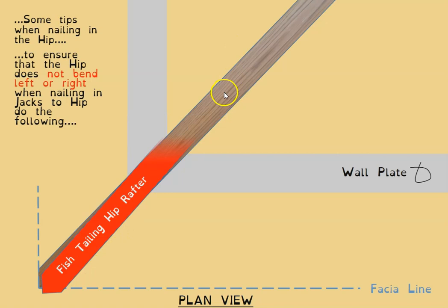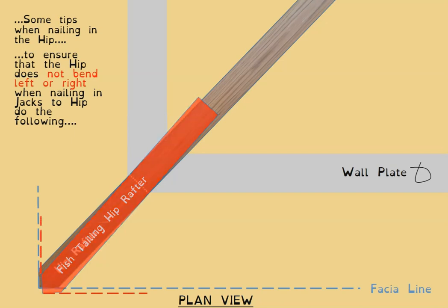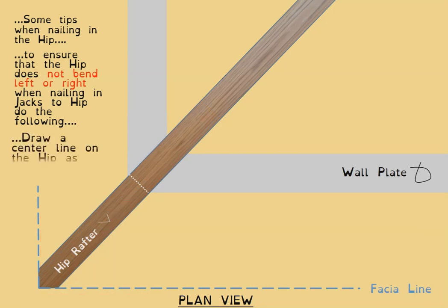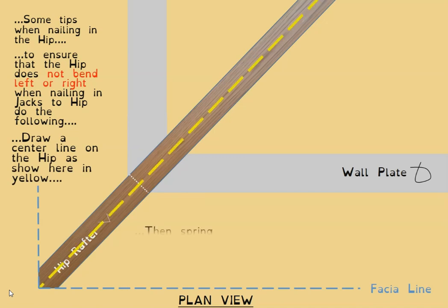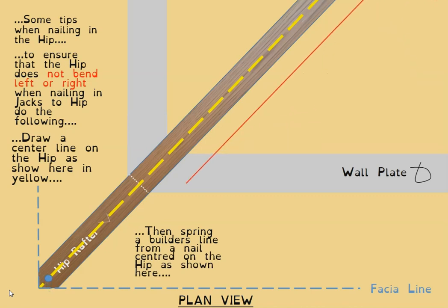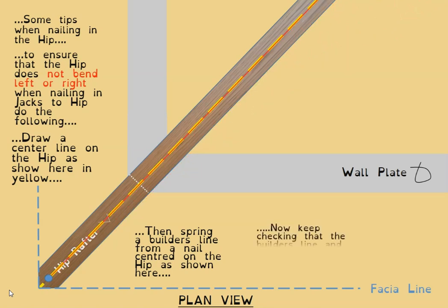If you don't spring a line, you could end up with the fascia line going out of alignment, shown in red here — that's what we're trying to avoid. The steps are: draw a center line with your combination square along the hip, then spring a chalk line along the center. Once the chalk line and the builder's line are aligned with each other, you have a dead straight hip. Watch that line as you're nailing on the jacks going up the roof.